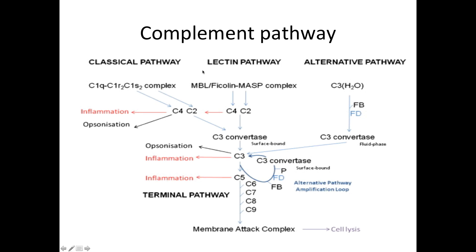In the alternative pathway, LPS or endotoxin found on the surface of gram-negative bacteria is bound by circulating C3B. Factor D then cleaves factor B into BB and BA. C3B and BB form C3 convertase, and C3BB together with C3B forms C5 convertase, after which the final common pathway continues.